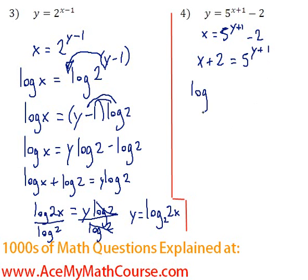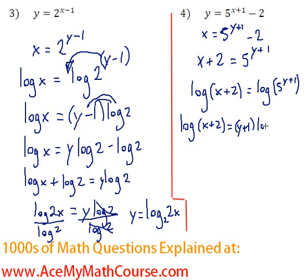Now I will be logging both sides of the equation because I want to bring the exponent down. Great. Now I can bring y plus 1 down to the bottom. So y plus 1 times log 5. Then what I'll do is that I'm already going to divide both sides of the equation by log 5.